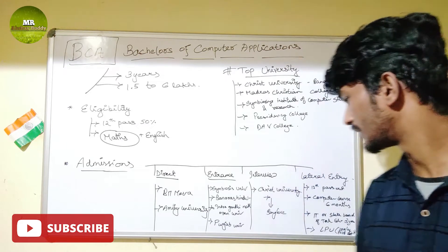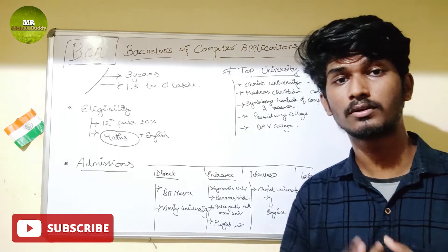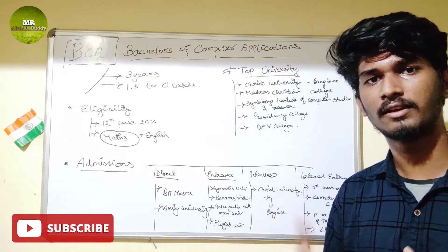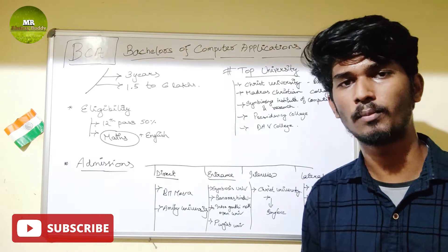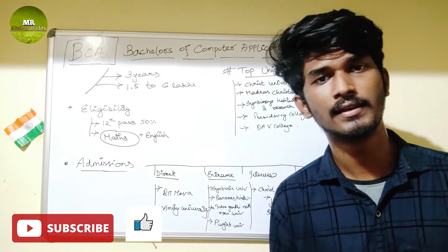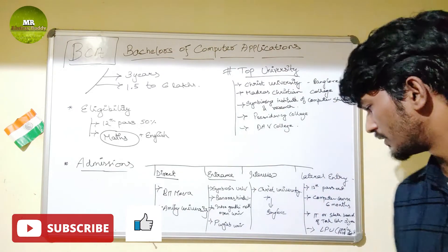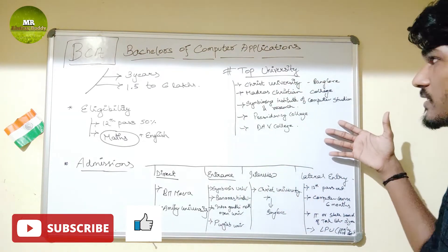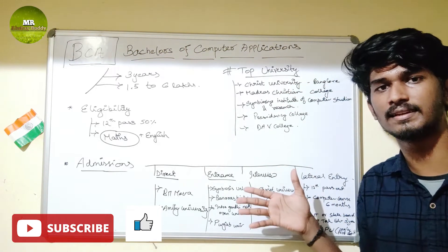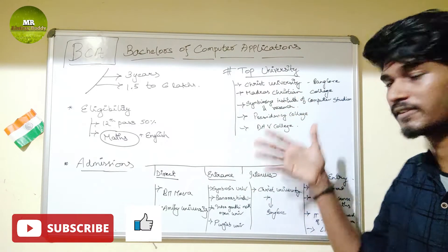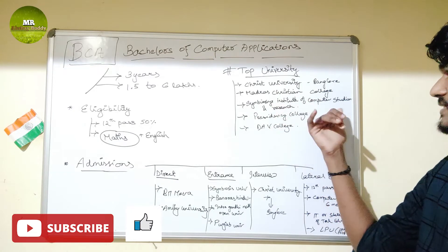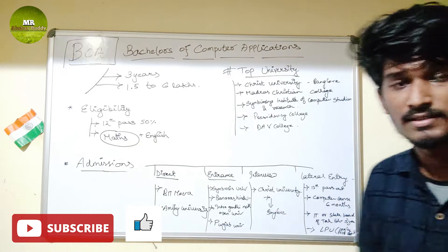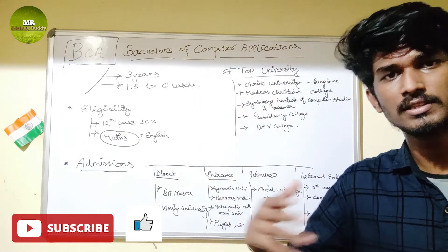For lateral entry, the criterion is that you must have passed a diploma from the State Board of Technical Education, or completed a computer course of at least 6 months, and you can join in the second year. Top colleges for BCA in India include Christ University Bangalore, Madras Christian College, Symbiosis Institute of Computer Study and Research, Presidency College, and DAB College. You can find these listed in the description.